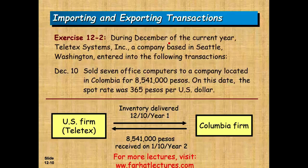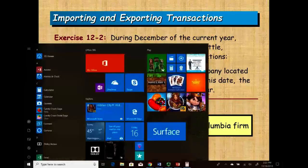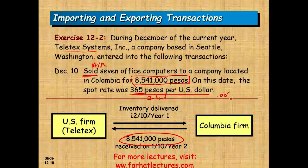Here's an example: During December, Teletext Systems, a company based in Seattle, sold seven office computers to a company in Colombia for 8,541,000 pesos. On that date, the spot rate was 365 pesos per U.S. dollar. To convert: this is an indirect exchange rate, so divide by 365 to get the direct rate of $0.0027. We take 8,541,000 pesos divided by 365, giving us a receivable of $23,400 and sales of $23,400. This is the transaction date entry using the spot rate.